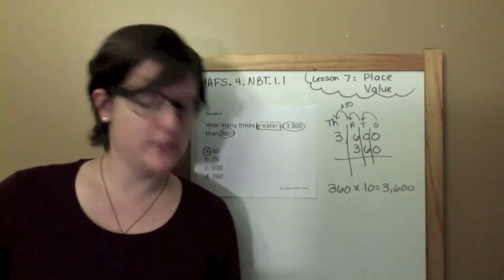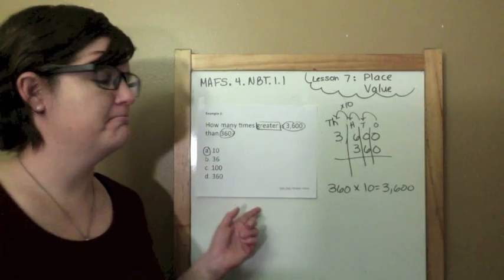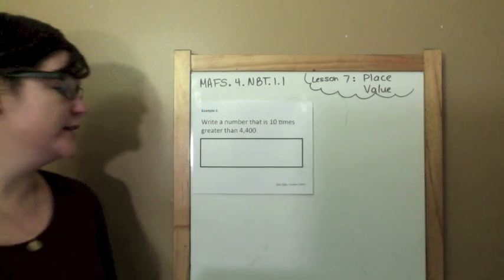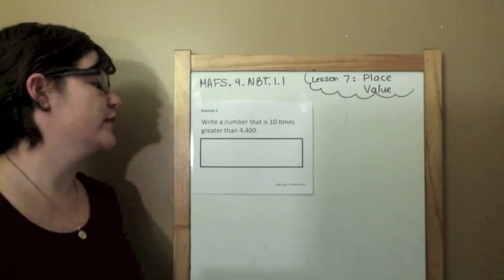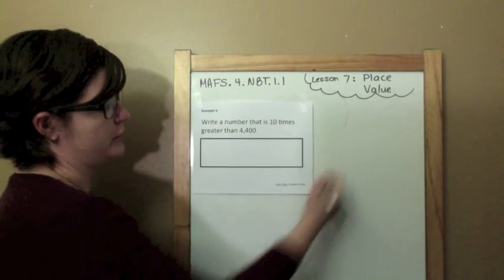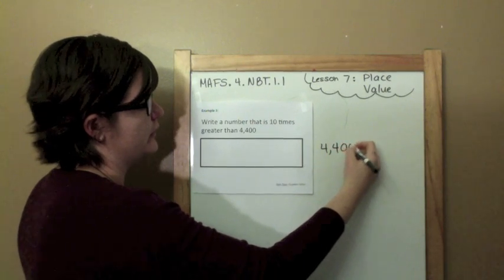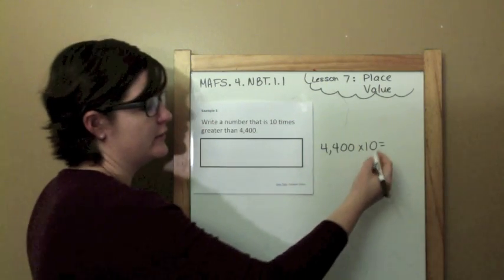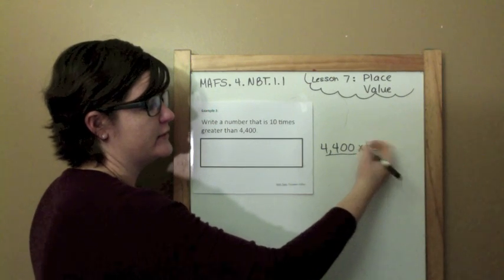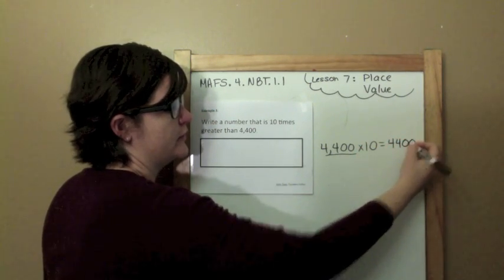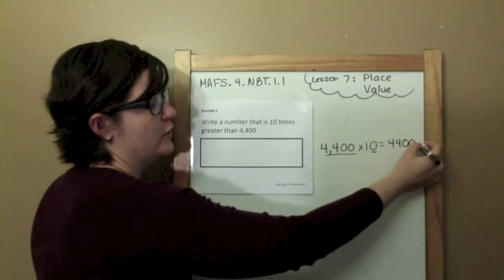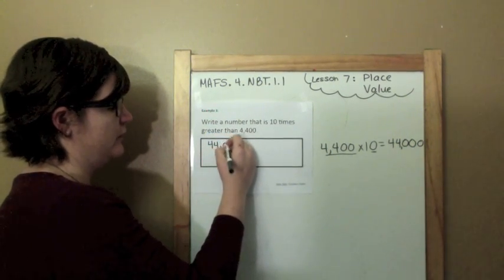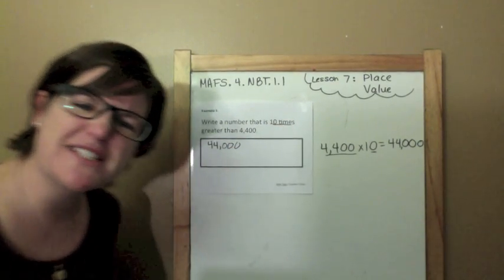Last answer was 10. This answer was 10. Example 3: write a number that is 10 times greater than 4,400. So I just — we know that when we multiply by 10, we take the number we're given and add a zero. So I'm going to write 4,400, and because I'm multiplying by 10, we add a zero: 44,000. Times 10, 10 times again.